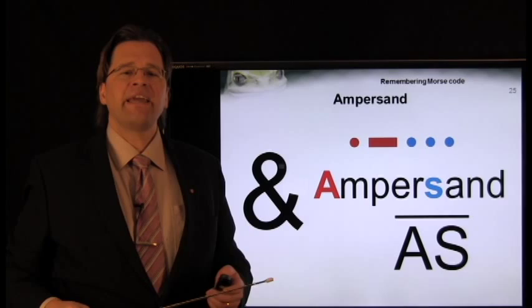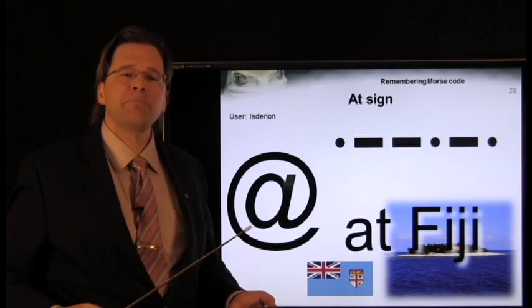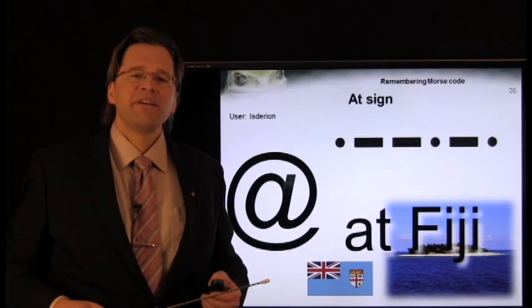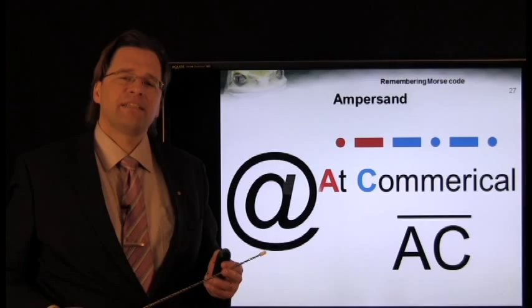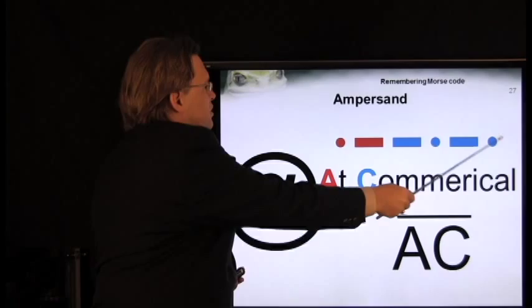As for the at symbol, Mo, where would you like to be? I'd like to be at Fiji. Who else? Why wouldn't you want to be there? However, you can also remember AC. The Morse code for A, at, followed by the Morse code for C, where we remember the word Kate.